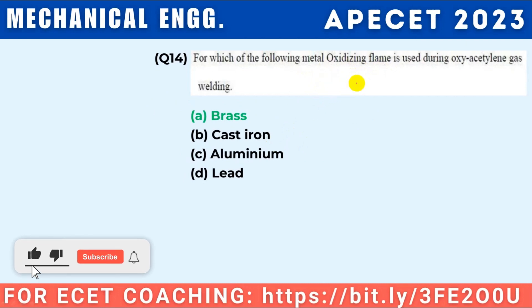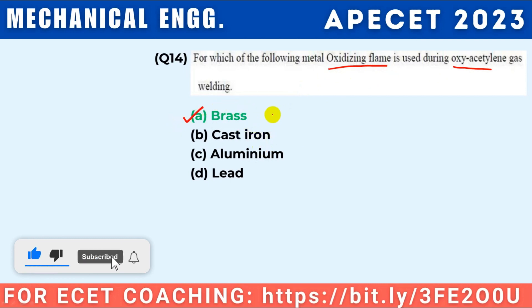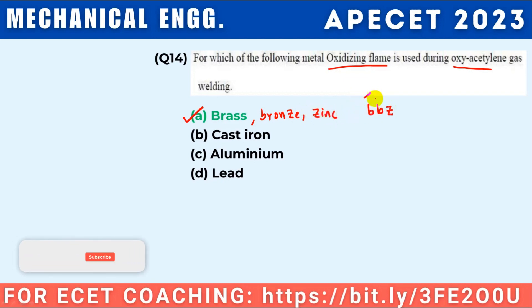For which of the following metals is oxidizing flame used during oxyacetylene gas welding? The answer is brass. Oxidizing flame is used for brass, bronze, and zinc alloys — remember BBZ: brass, bronze, and zinc alloys.